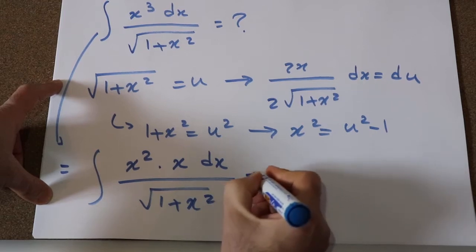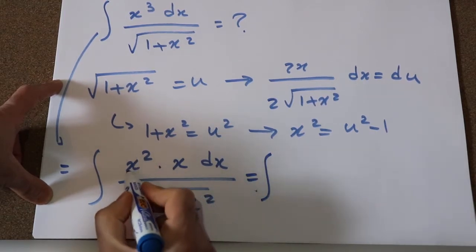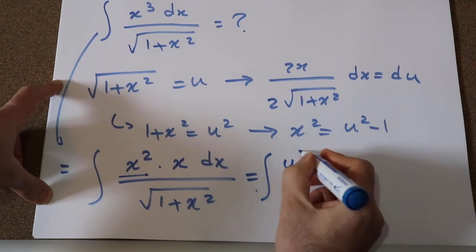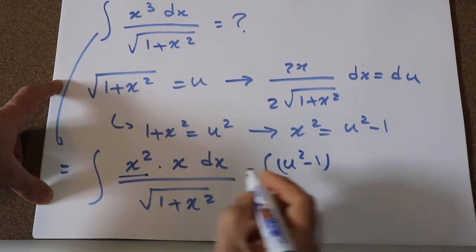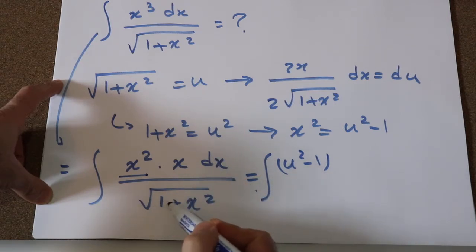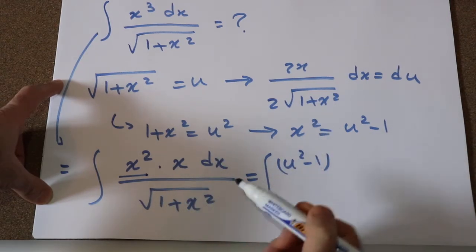so now this integral will be equal to integral of, instead of x², I write u² minus 1. Okay, and instead of x dx divided by square root of 1 plus x², I simply write du.